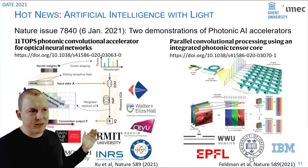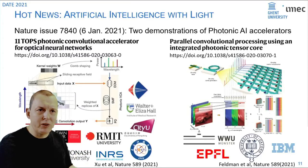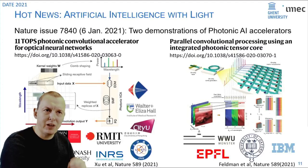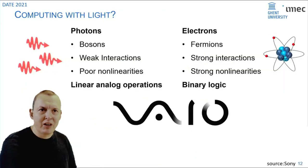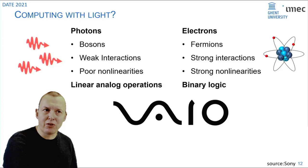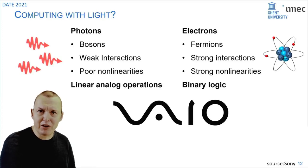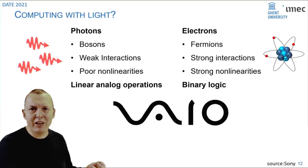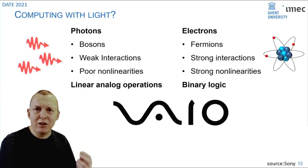Now if you start building things like this to do calculations you have to keep in mind that computing with light is very different than computing with electrons. Electrons are fermions which interact very strongly which means it's quite easy to make binary logic with these devices. On the other hand photons are weakly or hardly interacting bosons so they have poor nonlinearities but that allows you to do linear analog operations because they can be manipulated as waves.